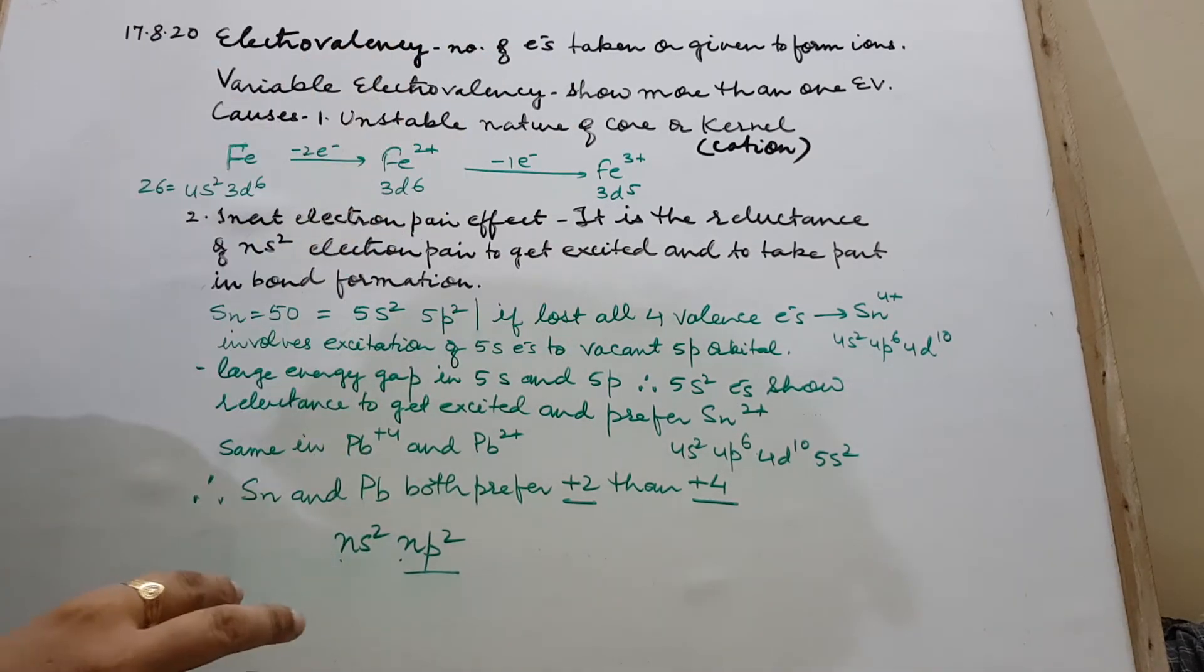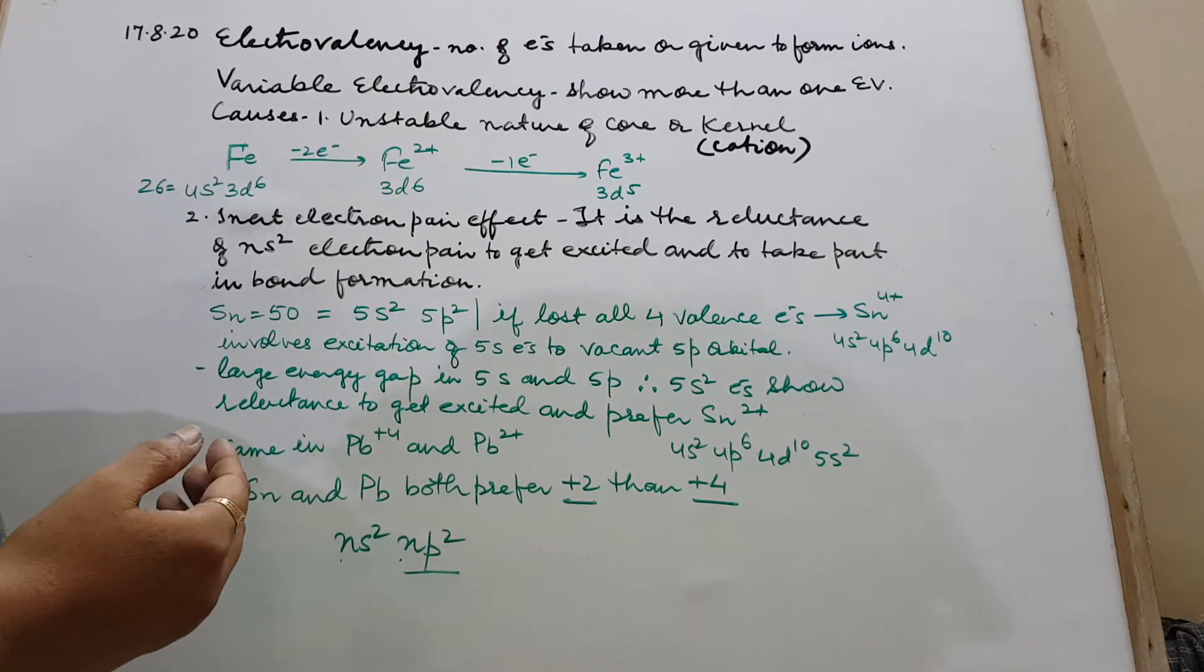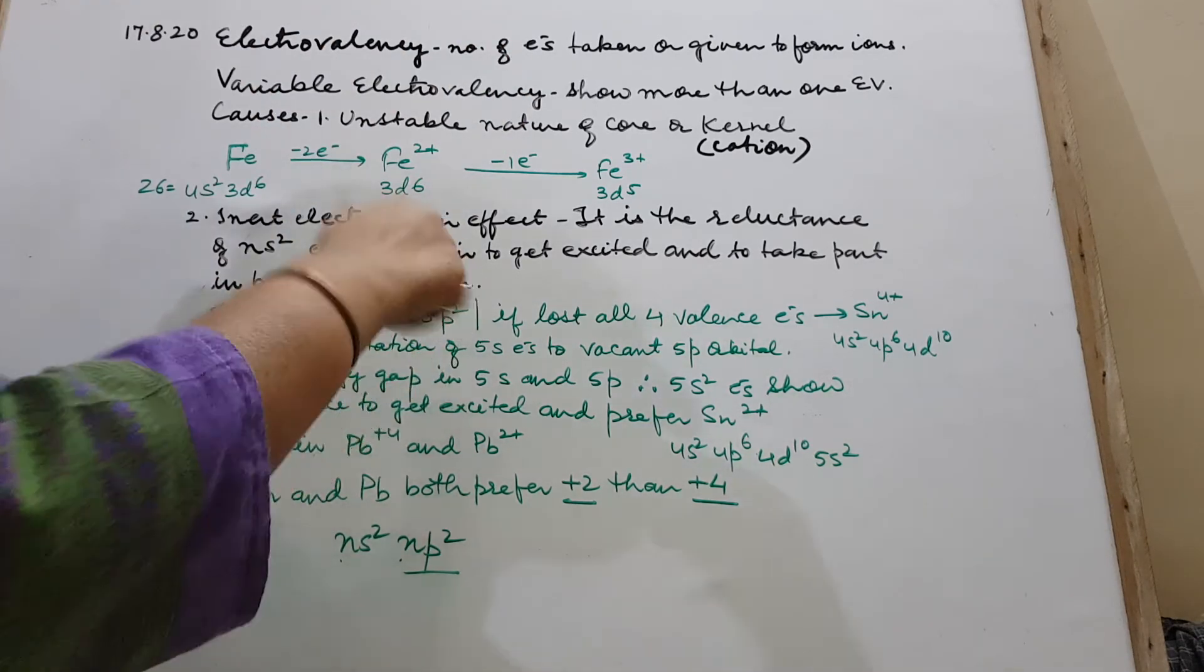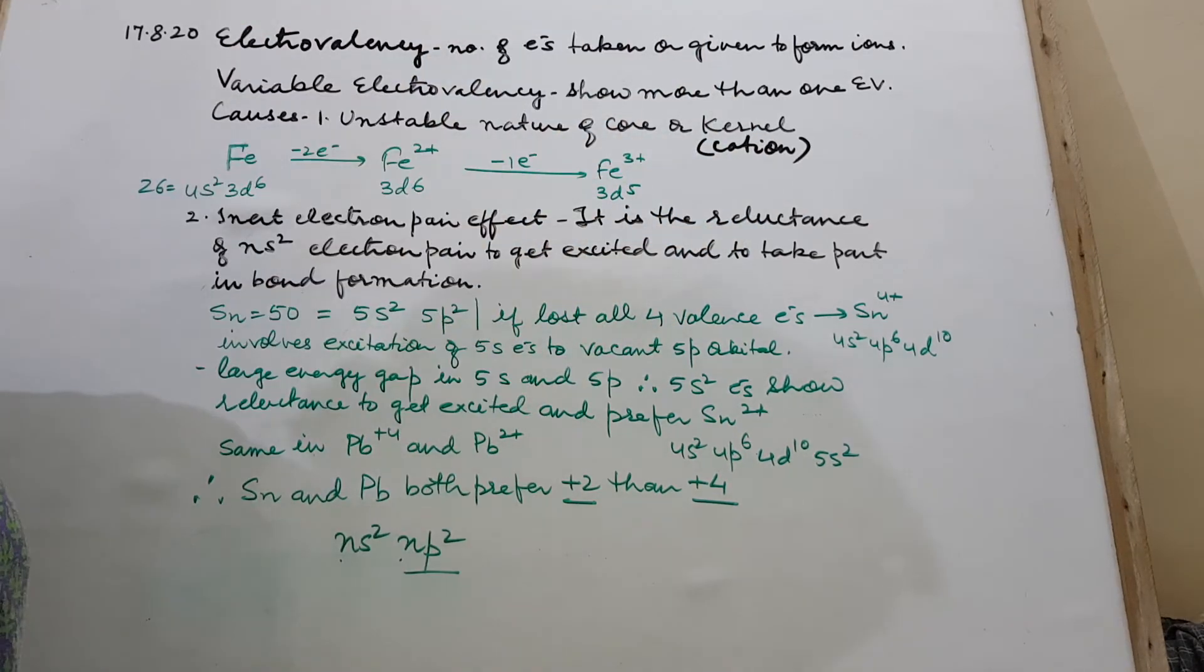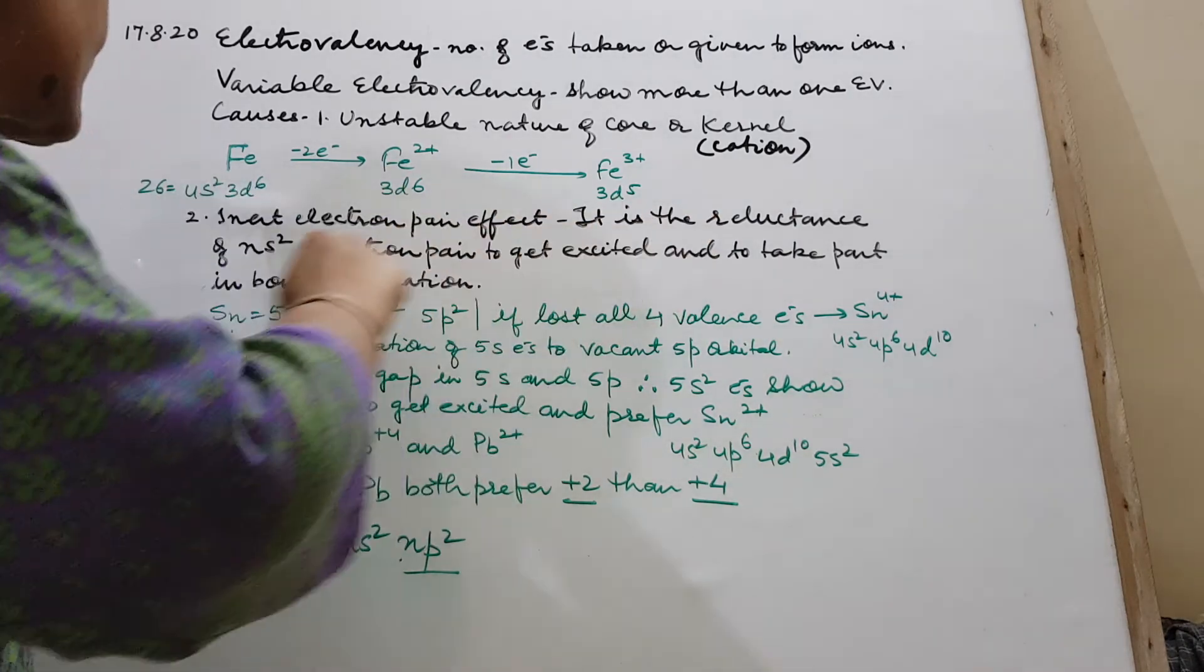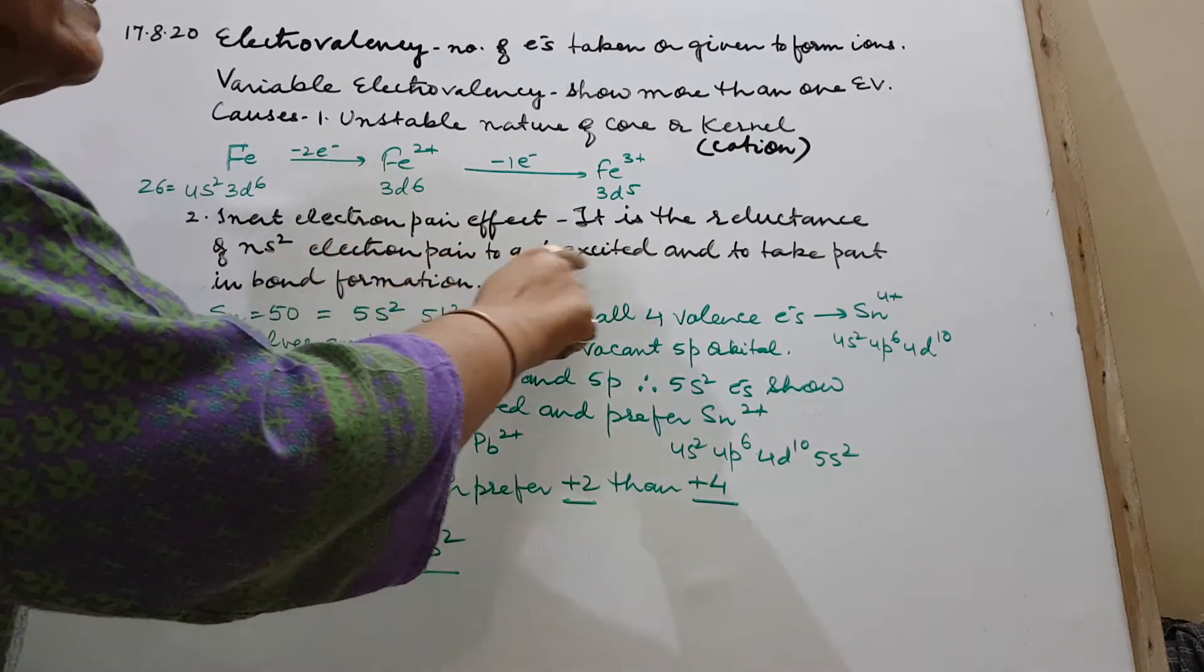But then you will say gradually it also forms SnCl4 because that is rarely formed. Because s2 electrons, the valence s2 electrons, ns2 electrons, whichever n is there, 5, 6, whatever, they don't want to go to higher p. P is only 2, so 1 p is vacant. They don't want to get excited because of a large difference of energy.